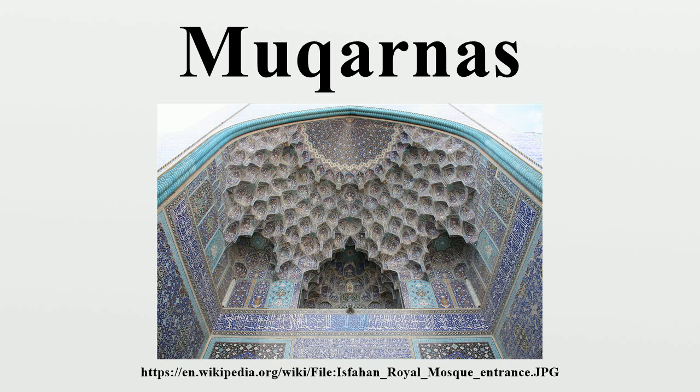Mukhanas are typically applied to the undersides of domes, pendentives, cornices, squinches, arches and vaults.